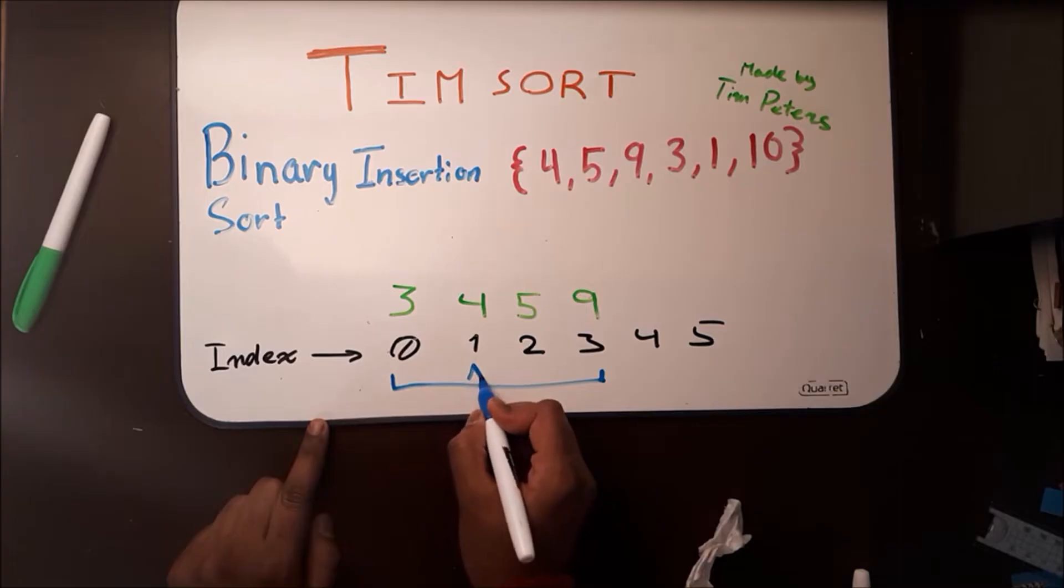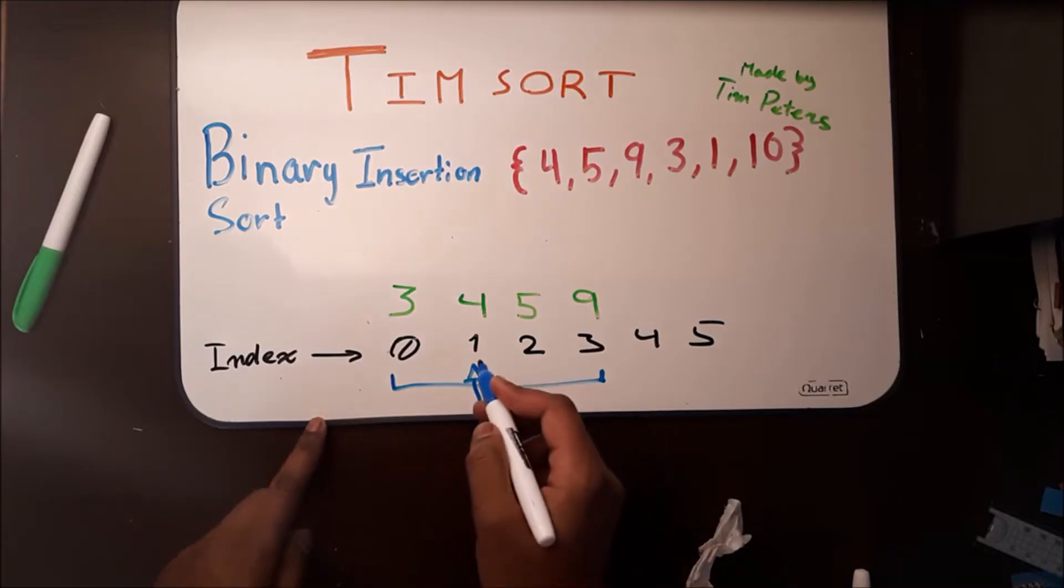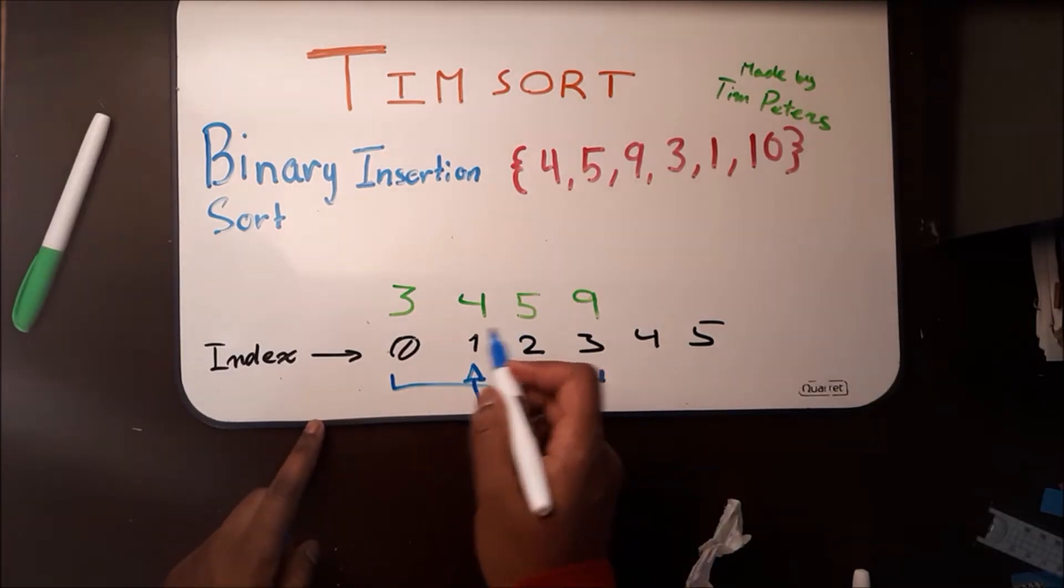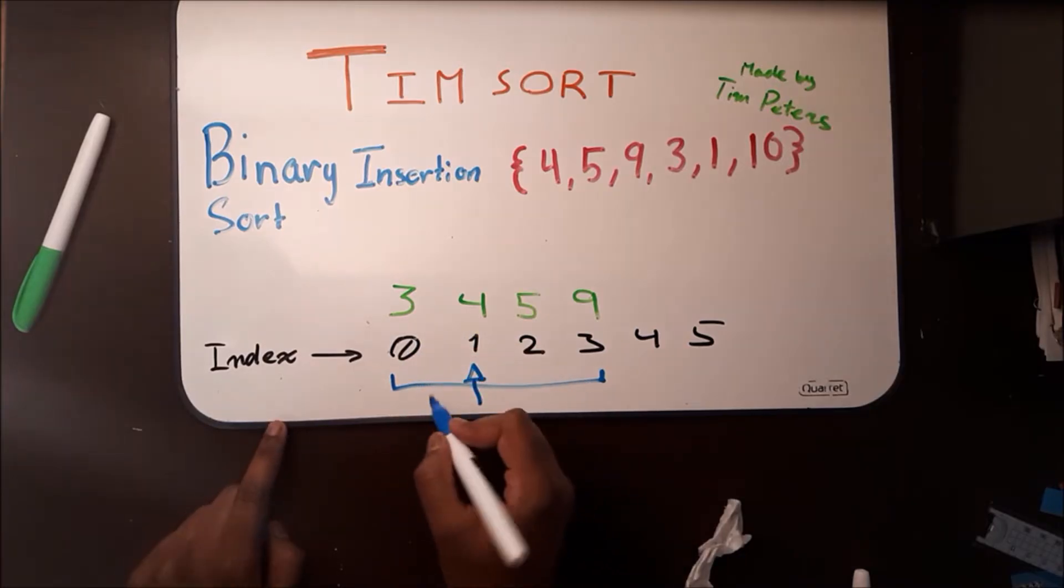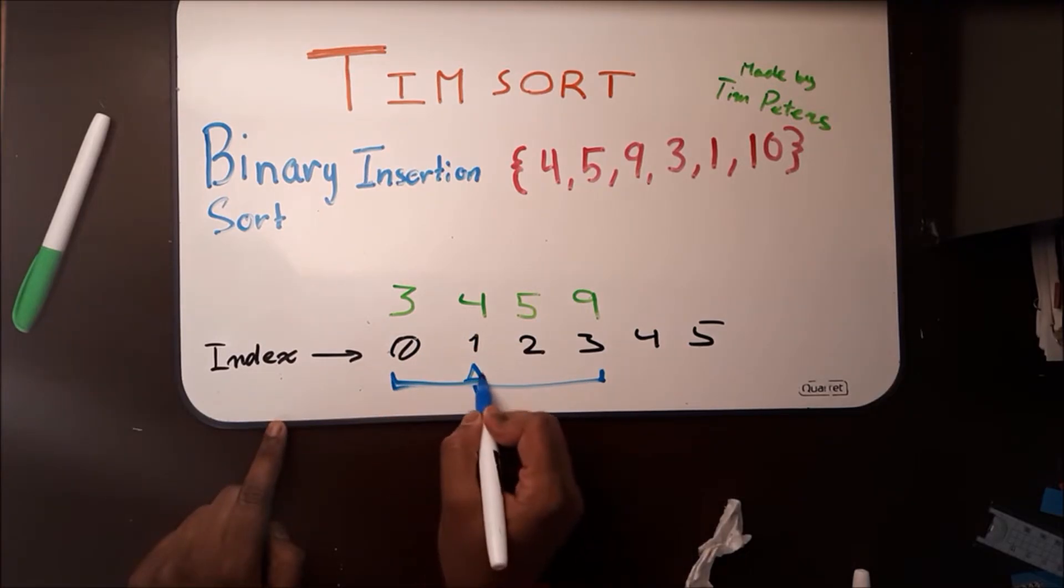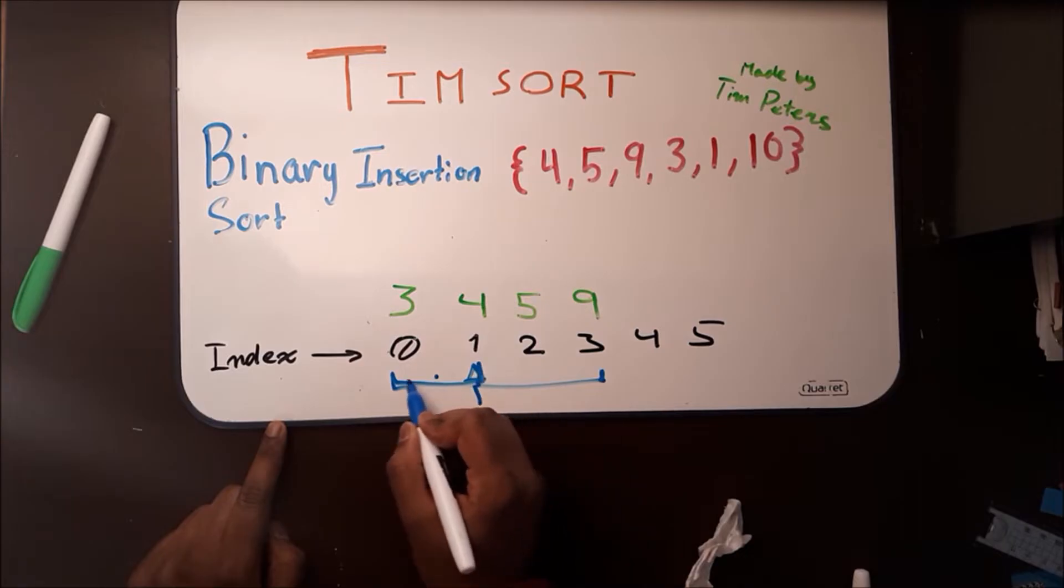Find the middle, which is going to be index number 1. At index 1, we see that 1 is less than 4, so it's going to have to go to the left of 4. So then we do another binary search right here, and the middle is going to be at index 0.